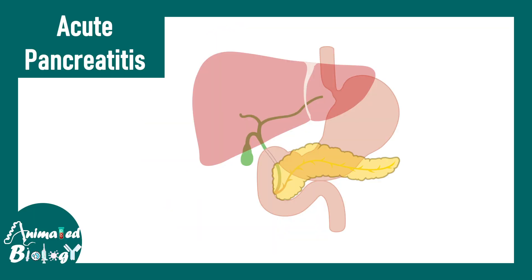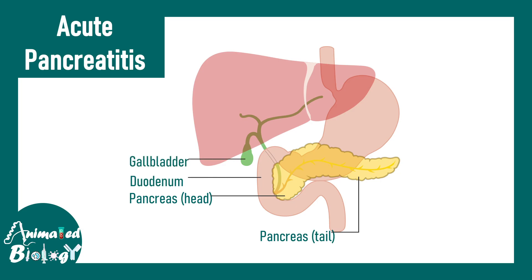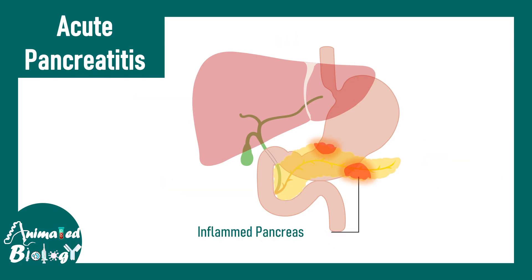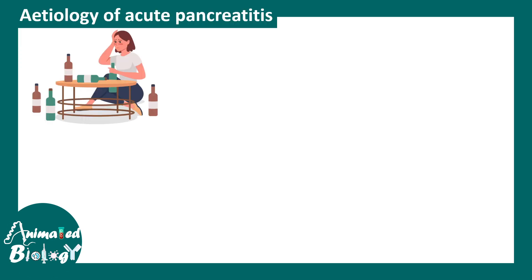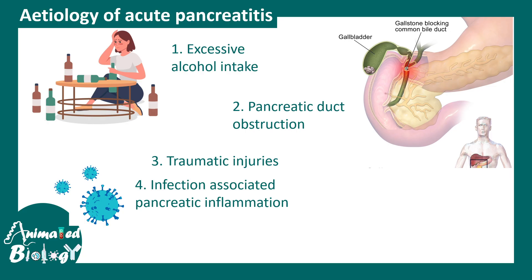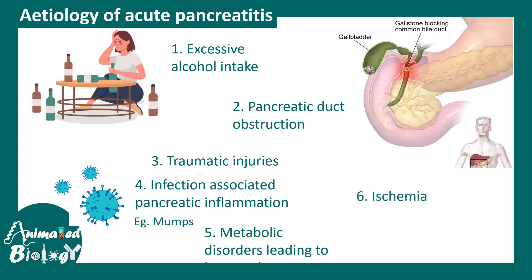Now let's compare acute pancreatitis with chronic pancreatitis. In acute pancreatitis, the digestive enzyme and hormonal secretion ability of the pancreas is compromised, with localized inflammation. It may occur short-term and reoccur based on the cause. The major causes of acute pancreatitis include alcoholism, biliary obstruction, gallstones, traumatic injuries, infections such as mumps and Coxsackie virus, metabolic disorders, ischemia, and genetic factors.